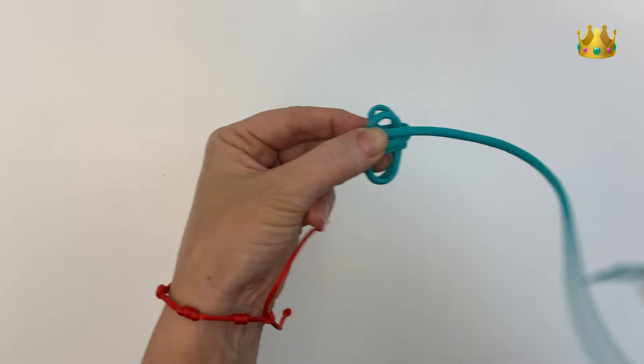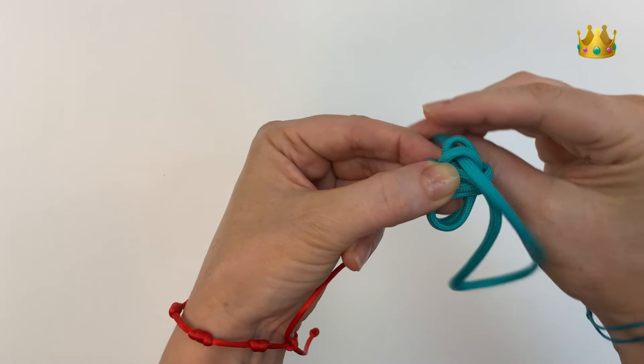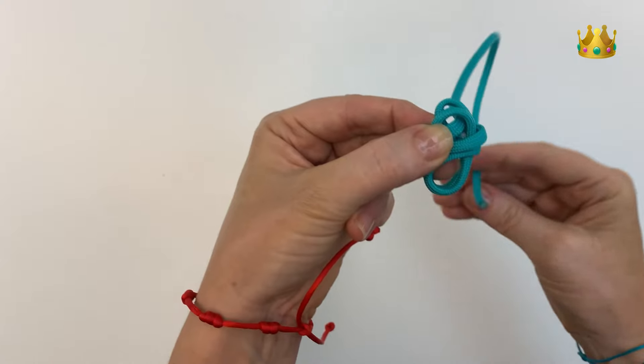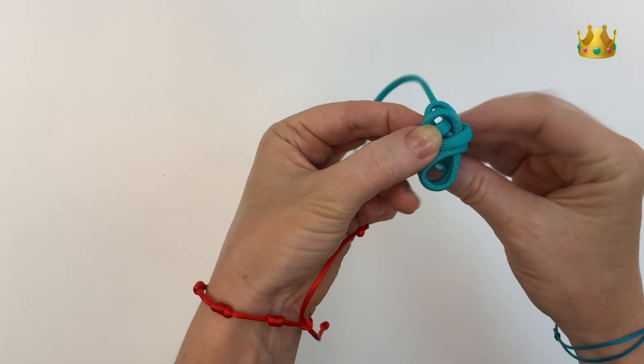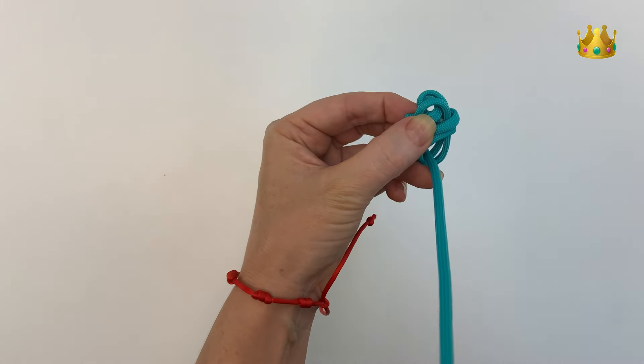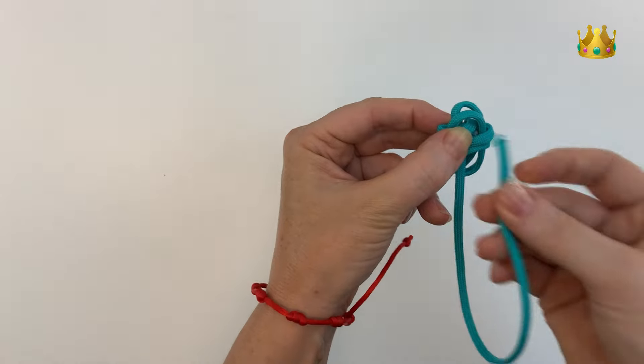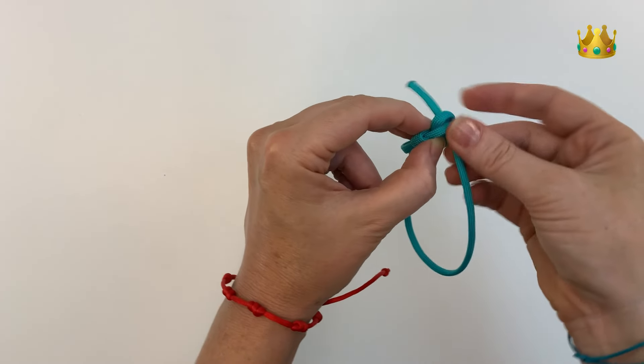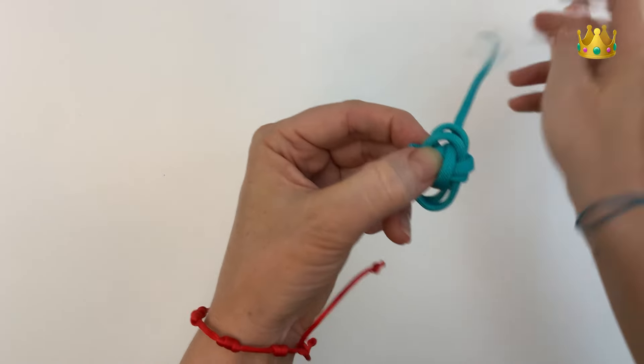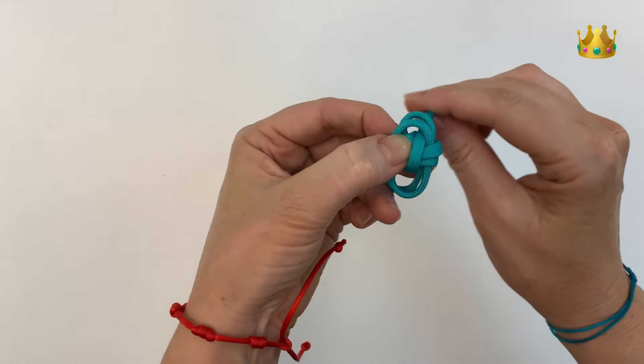Now bring the end of our cord down through the top loops and back up through the bottom loops. We want to do our two layers going this way as well, so back down the top loops and back up the bottom loops.